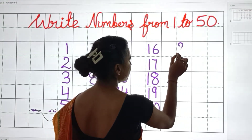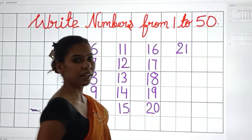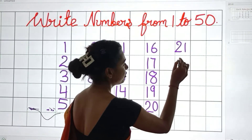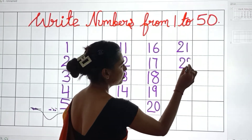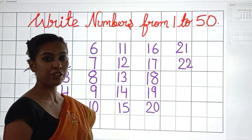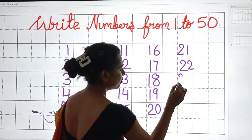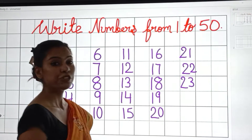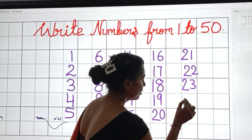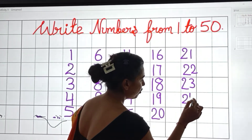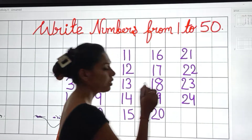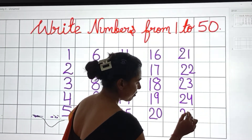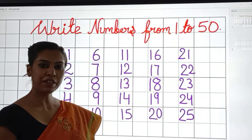2, 1 — 21. 2, 2 — 22. 2, 3 — 23. 2, 4 — 24. 2, 5 — 25.